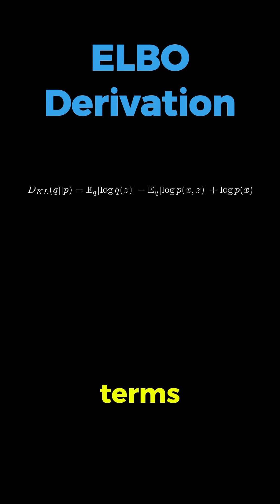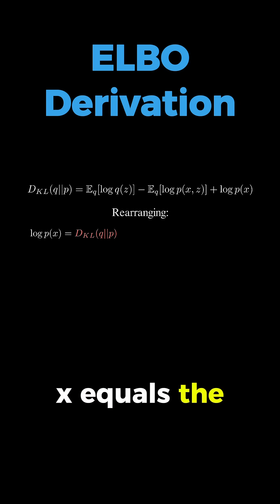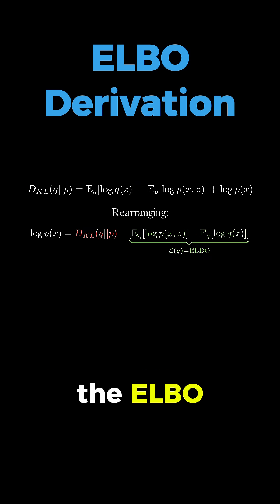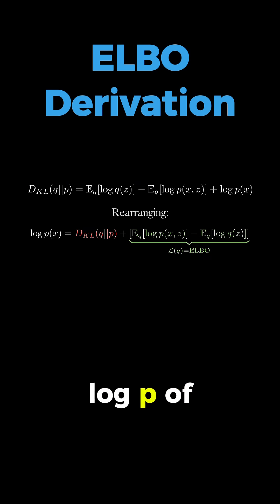After rearranging these terms, we get this beautiful result. Log P of X equals the KL divergence plus this new quantity we call the ELBO, which equals the expectation under Q of log P of X and Z minus the expectation under Q of log Q of Z.